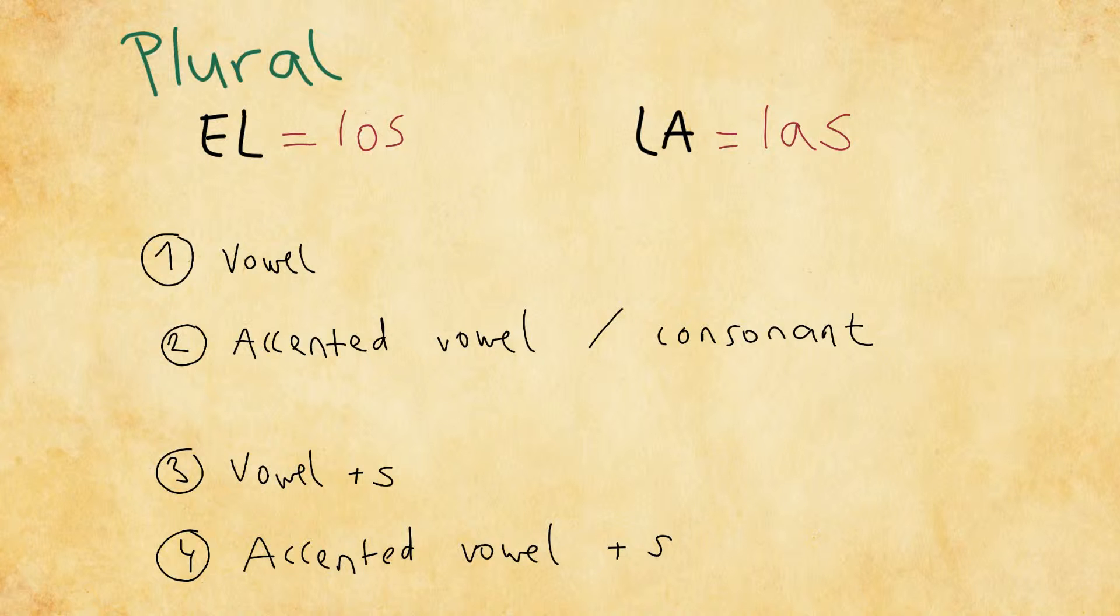So if I were to take an example, I could say, for example, one book in Spanish would be el libro, but more books would be los libros. So I'll just write it down. Los libros.